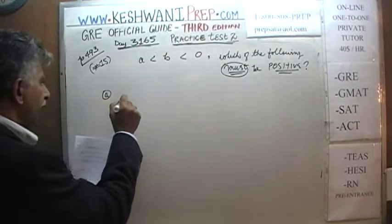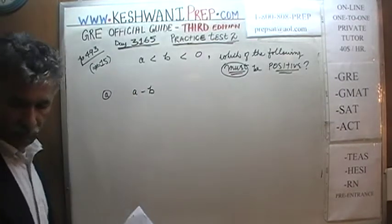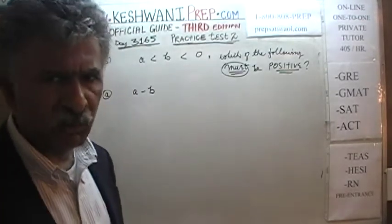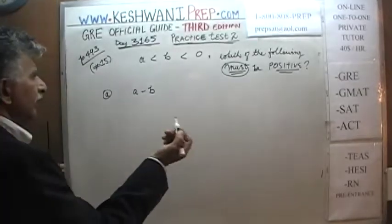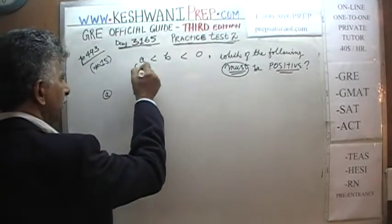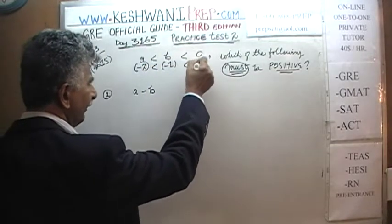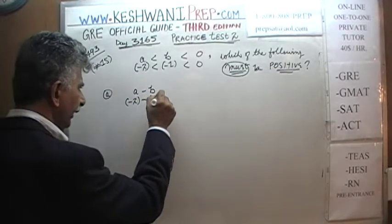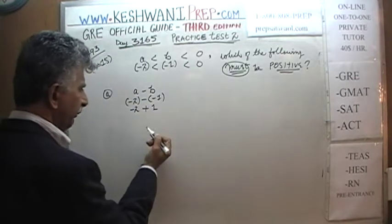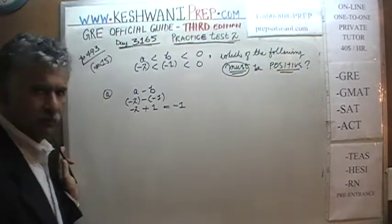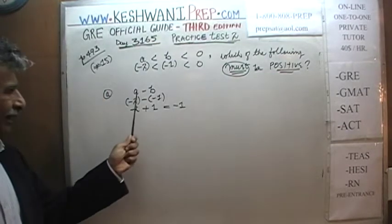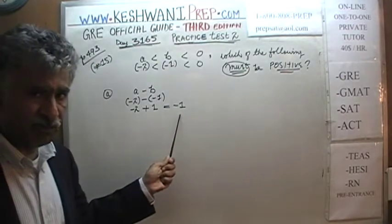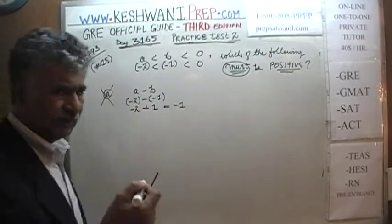Answer choice A says A minus B. Let's plug in numbers: let A equal negative 2 and B equal negative 1, since negative 2 is less than negative 1 which is less than 0. We get negative 2 minus negative 1, which gives us negative 2 plus 1, which equals negative 1. We found one instance where A minus B is not positive, so answer choice A does not work.